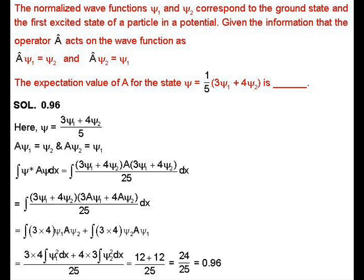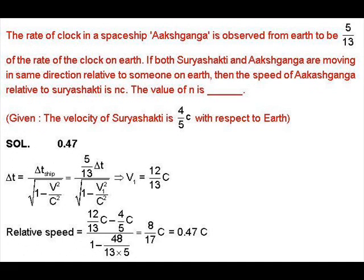This is equivalent to integral of (3ψ₁ + 4ψ₂)Â(3ψ₁ + 4ψ₂) divided by 25, dx. By solving this and applying the normalizing and orthogonal conditions, we get the expectation value of A is 24/25, which equals 0.96.